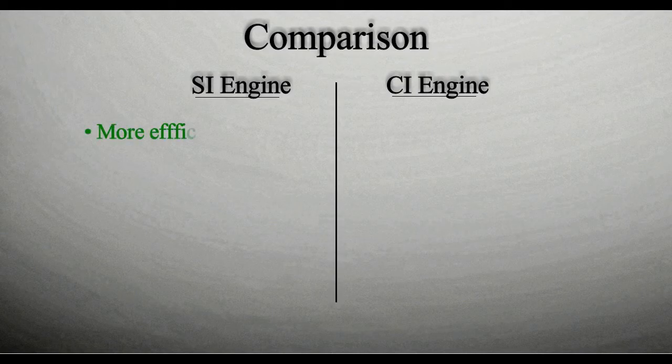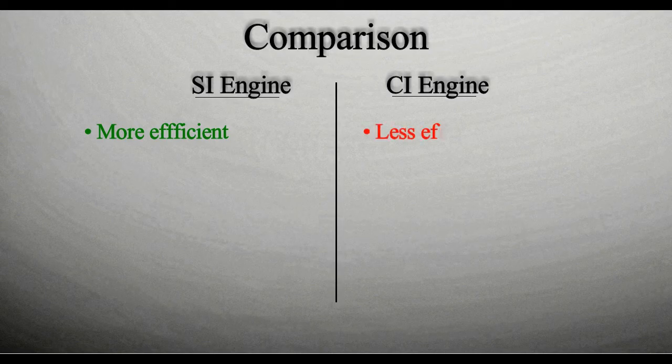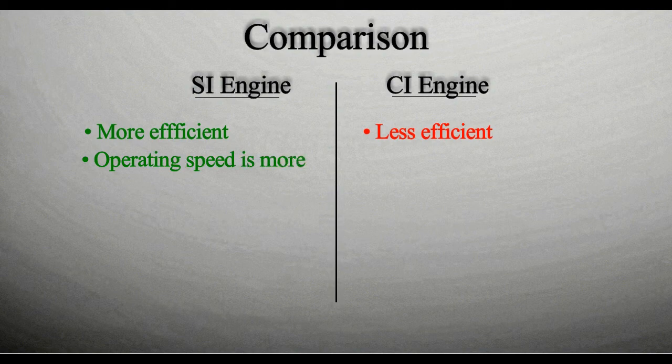Spark ignition engines are more efficient than compression ignition engines. Operating speed for SI engines is 3000 to 6000 RPM, and for CI engines is 400 to 3500 RPM.